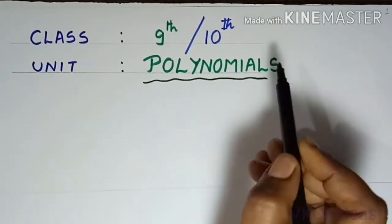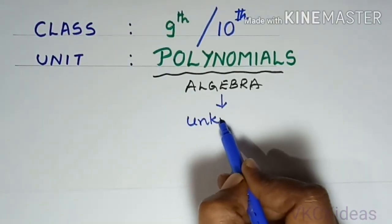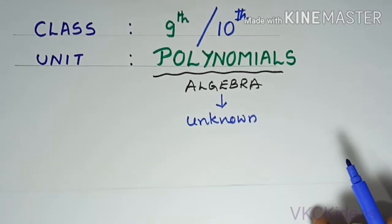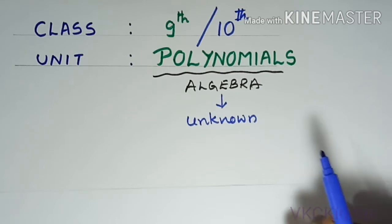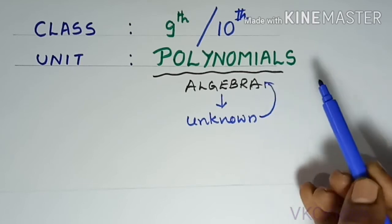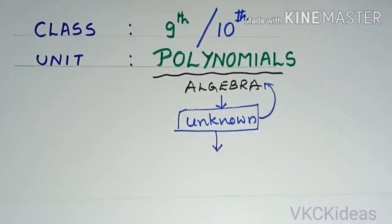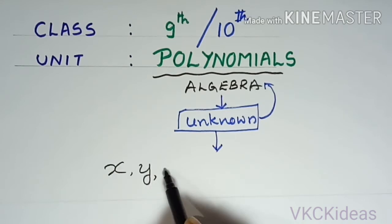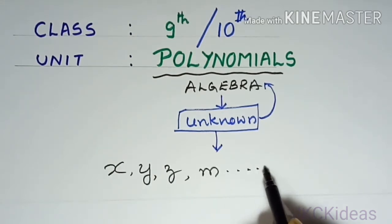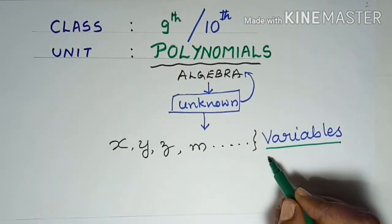Polynomials is a chapter from algebra. As we know, algebra speaks about unknown quantities — in our daily life or in science, if we want to represent something that we do not know, we take the help of algebra. To represent these unknown quantities we use letters like x, y, z, m and so on, which are termed as variables. The other word for these variables is literal.